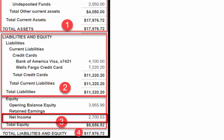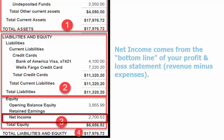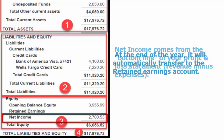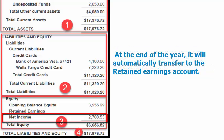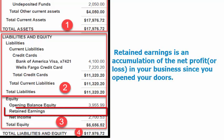Net Income: this figure comes directly from the bottom line of your profit and loss statement. At the end of the year, QuickBooks will automatically transfer this amount to the retained earnings account. Retained earnings is an accumulation of the net profit or loss in your business since you opened your doors.